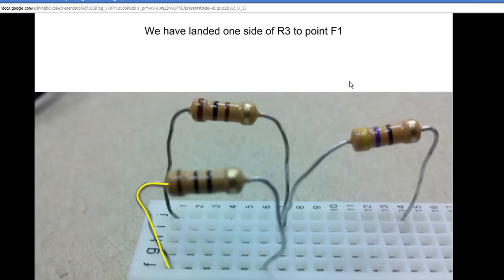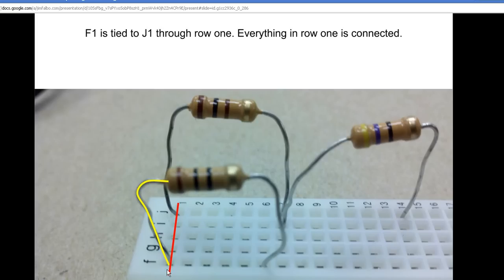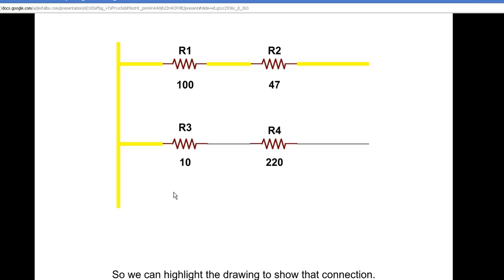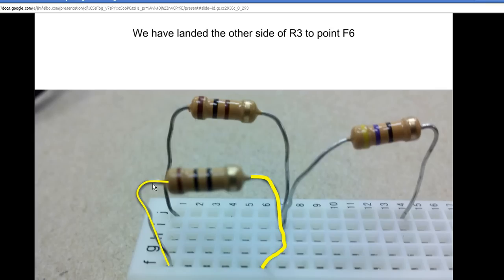I'm going to connect one leg of R3 to point F1. Row 1 is one common bus, all tied together, so we have now connected one leg of R3 with this leg of R1. I can highlight that connection and highlight this bus because these are now tied together.